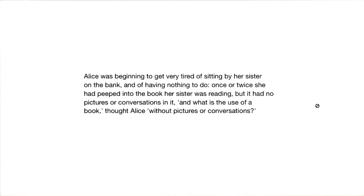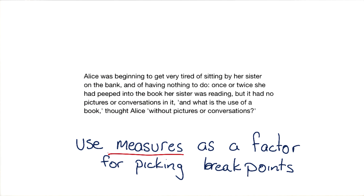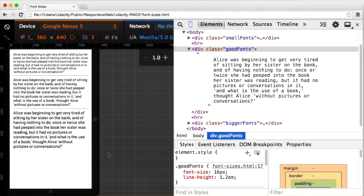We need to consider the way people read as we create our designs, since it can affect our layout. That's why line length is an important factor to consider as you're building sites, and something I always take into consideration as I choose my breakpoints. It's also important to make sure that fonts are big enough to read across any device. I always set my base font to at least 16 pixels, and at least a 1.2 EM line height.